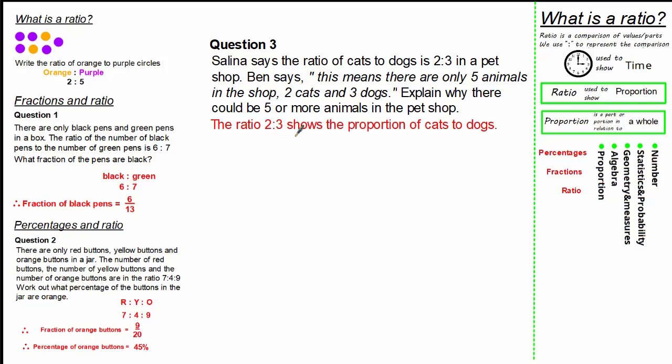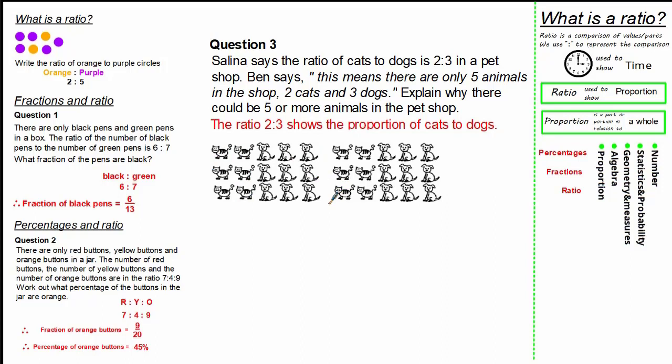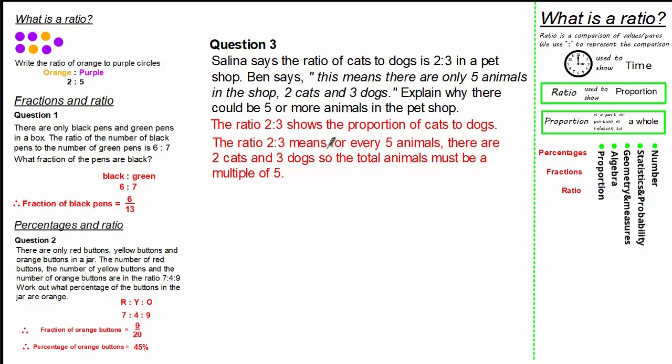Well, the ratio of 2 to 3 shows the proportion of cats to dogs. So, for example, this means we could just have 2 cats to 3 dogs, or we could have 4 cats to 6 dogs because the ratio of 2 to 3 still remains. We could even have 12 cats to 18 dogs. This is because the ratio of 2 to 3 still remains the same. Therefore, the ratio of 2 to 3 means for every 5 animals there are 2 cats and 3 dogs, so the total number of animals must be a multiple of 5.